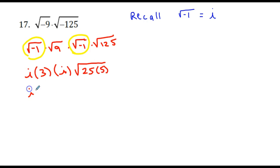The square root of 25 is just 5. So when we simplify this, we have 3 times i times i times 5 times the square root of 5. This becomes 3 times 5 times the square root of 5, and then i times i gives us i squared.